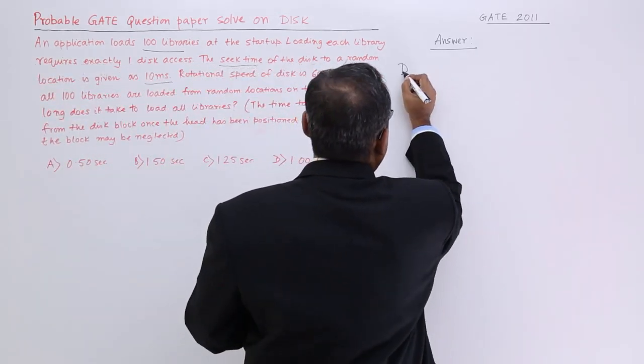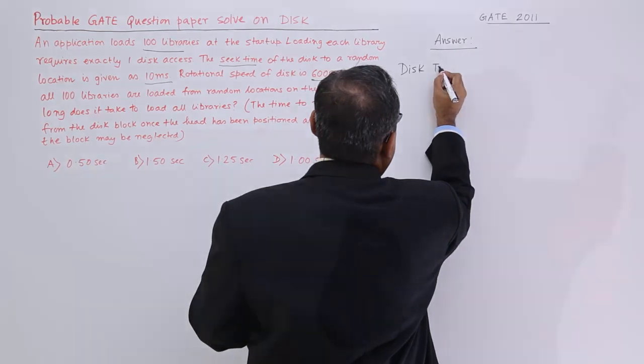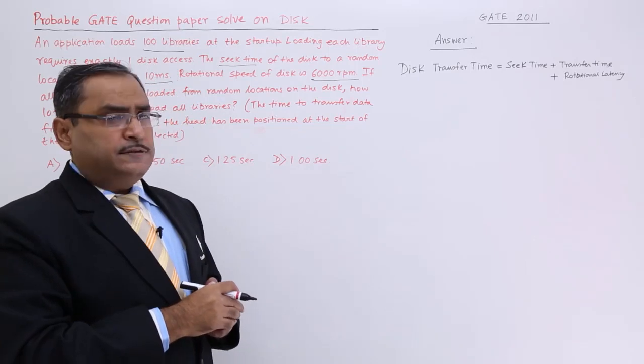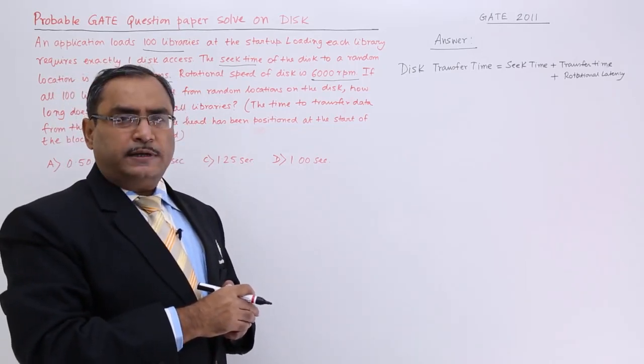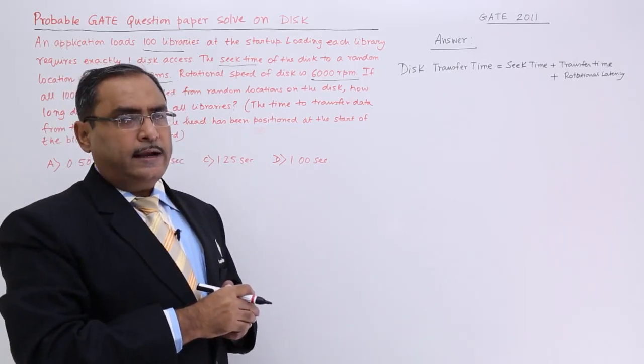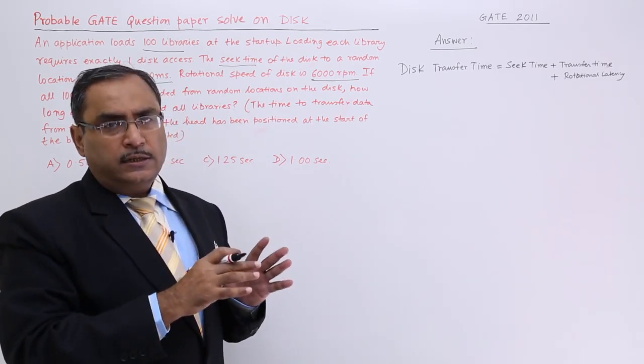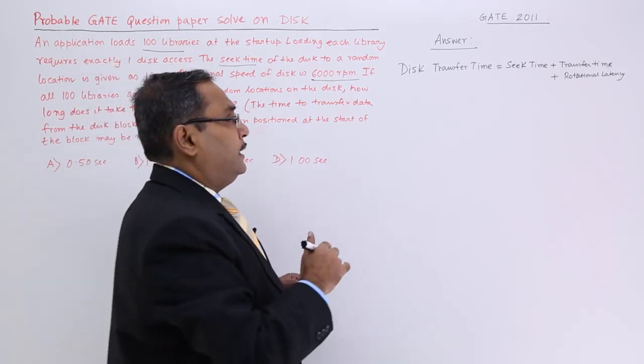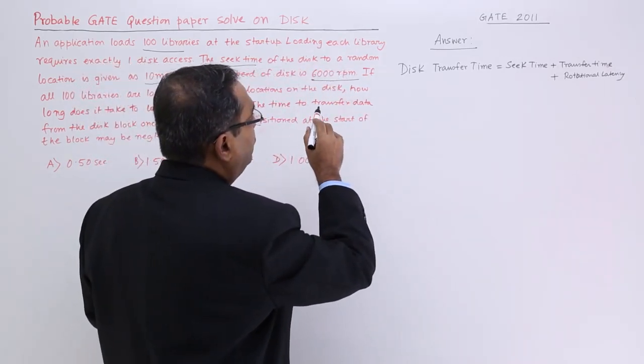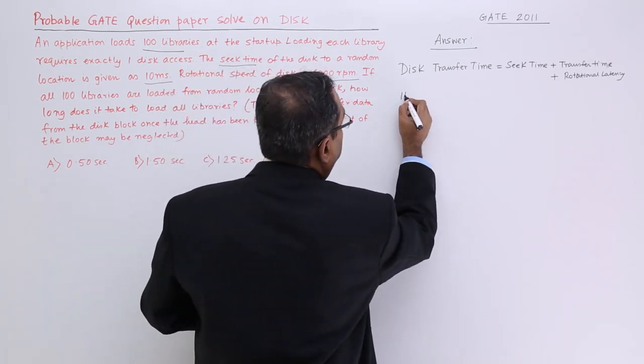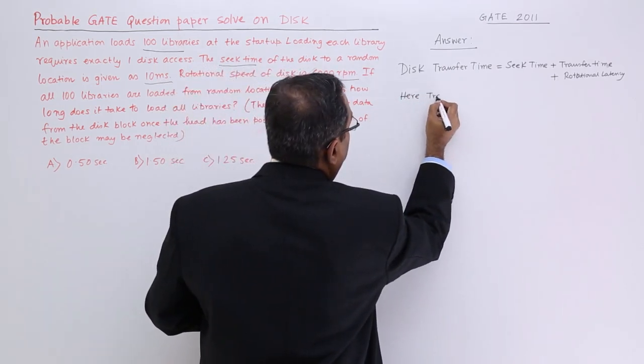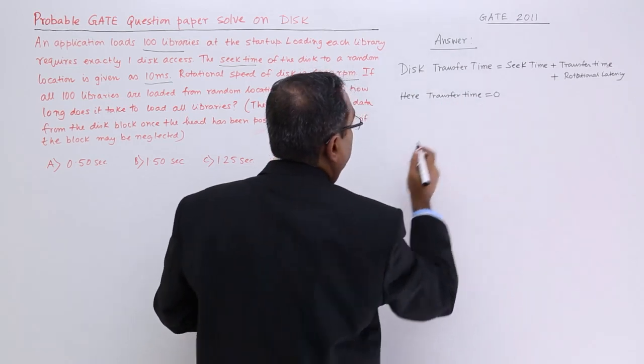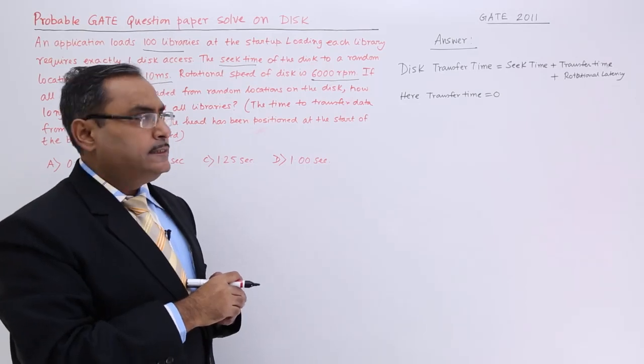Here you see disk transfer time is equal to seek time plus transfer time plus rotational latency. These three factors are there who are to be added to get the disk transfer time. Here we know that we are getting the transfer time equal to 0.